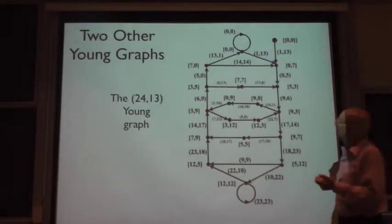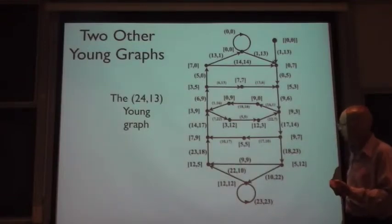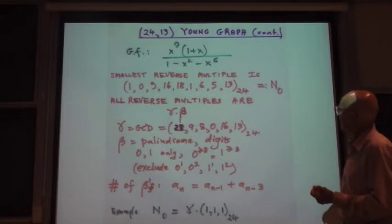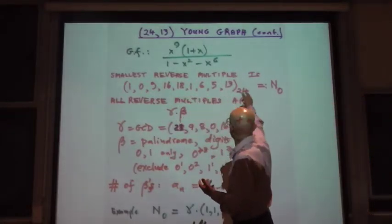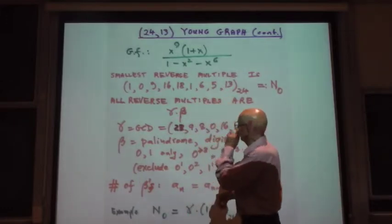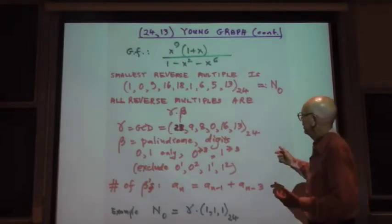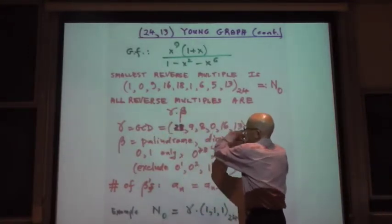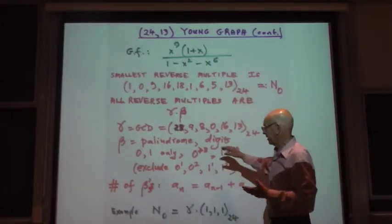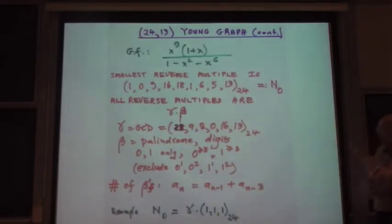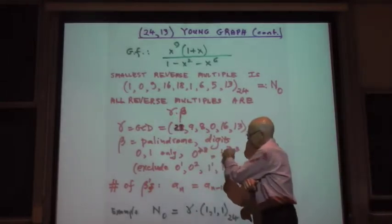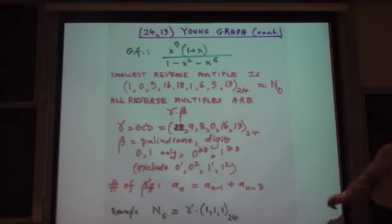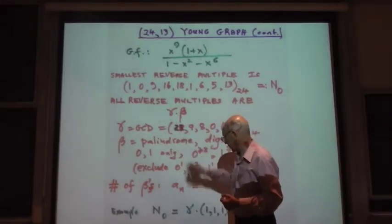Now, here's another example. This is the 24-13 Young graph. Things have gotten a lot more complicated. The generating function is, however, very simple. The smallest reverse multiple is this of length 9 corresponding to the x to the 9th there. And, again, this is palindromic. The reverse multiples are, there's a GCD, which is not the same as the smallest reverse multiple. But all the multiples are gamma times beta. Beta is, again, binary, palindromic. Every run of zeros and ones must have length at least three.